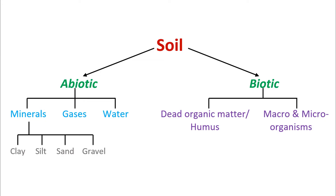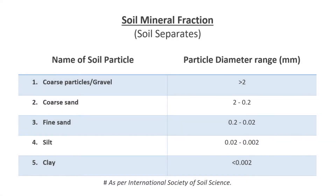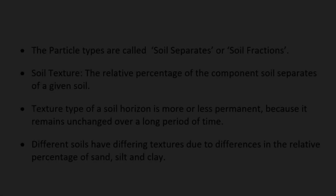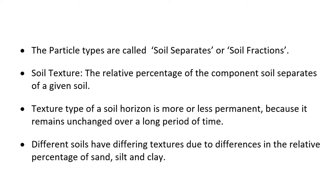The mineral fraction of soil consists of particles of various sizes. According to their size, soil particles are grouped into different types. The particle sizes of the various components of soil are suggested by the International Society of Soil Science. The particle types are generally called soil separates or soil fractions.